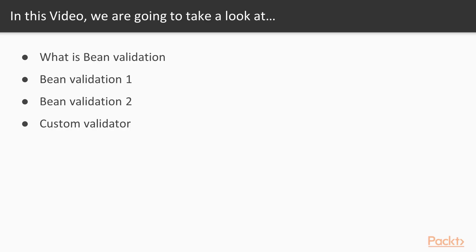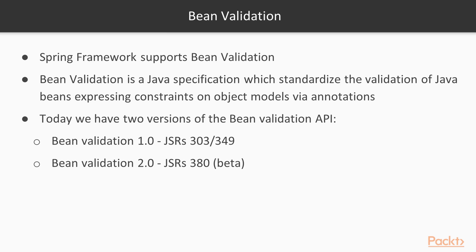We will learn how Bean Validation works with Spring 5 — what is Bean Validation, what is Bean Validation 1, what is Bean Validation 2, and how to create a custom validator. Spring 4 supports Bean Validation. Bean Validation is a Java specification which standardizes the validation of Java beans, expressing constraints on object models via annotations. Today we have two versions: Bean Validation 1 and Bean Validation 2.